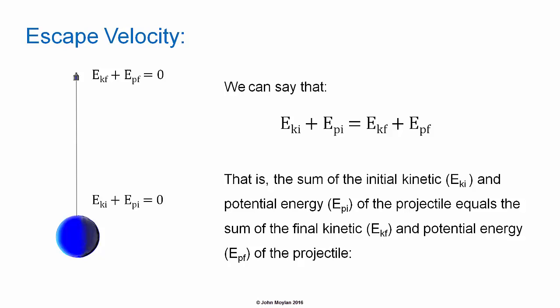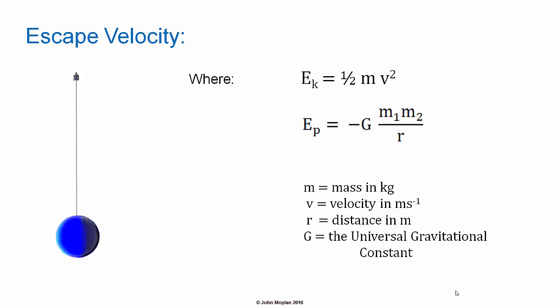That is, the sum of the initial kinetic energy E subscript KI and initial potential energy E subscript PI of the projectile equals the sum of the final kinetic energy E subscript KF and the final potential energy E subscript PF. As E subscript KF plus E subscript PF are equal to zero, because the kinetic energy of the projectile at the point at which its gravitational potential energy equals zero is going to be zero, the sum of the final kinetic and potential energy is zero. Therefore, the sum of the initial kinetic and potential energies must also be zero.